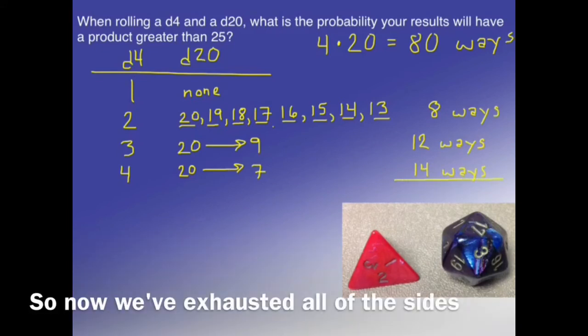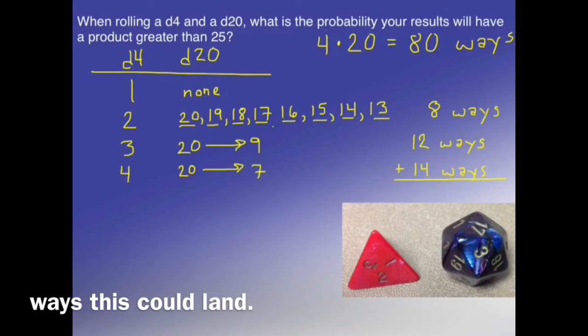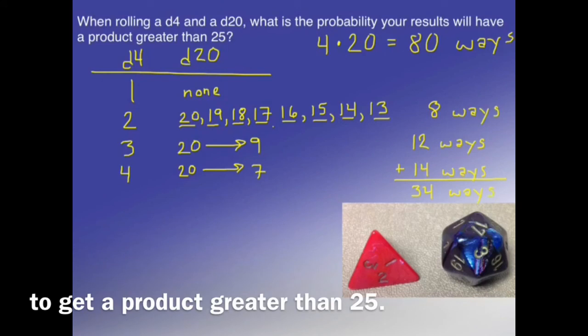So now that we've exhausted all of the sides the d4 can land on, we're done. We just need to add up the number of different ways that this could land. And that is 34 total ways to get a product greater than 25.